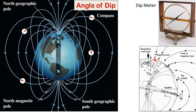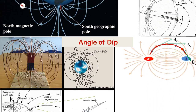The angle of dip at the magnetic pole is 90 degrees and it is 0 degrees at the equator. Here I have put some visuals to help you visualize the magnetic field lines around the magnet and also the direction of the magnetic field on these magnetic field lines.